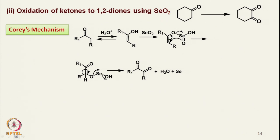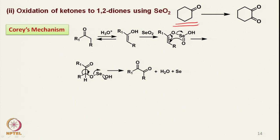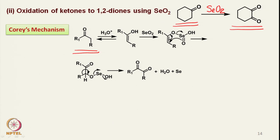A typical example shows how cyclohexanone can be converted into cyclohexane-1,2-dione using selenium dioxide. There are two mechanisms which have been proposed. The ketone, taken as a general example, under the reaction conditions in water under slightly acidic conditions will exist in keto-enol tautomeric equilibrium.